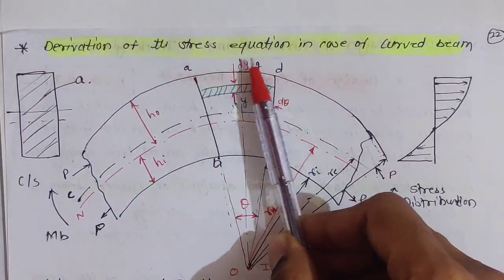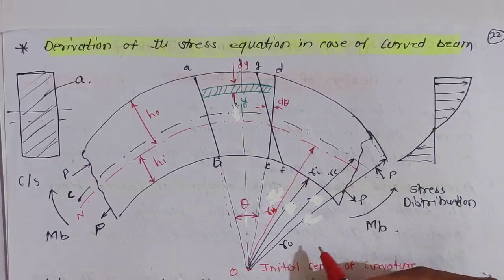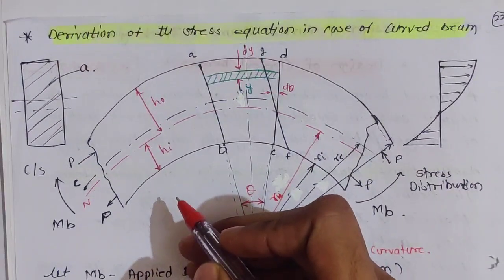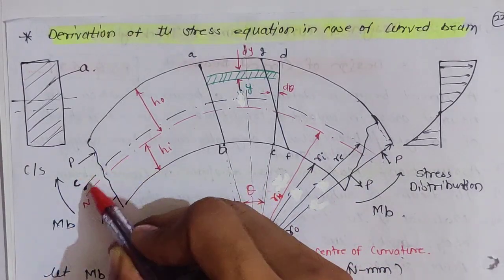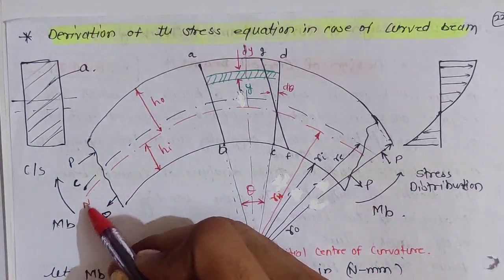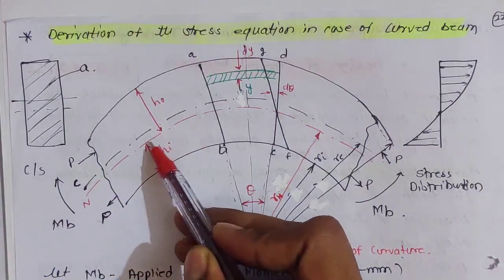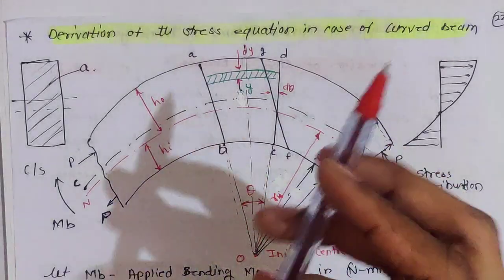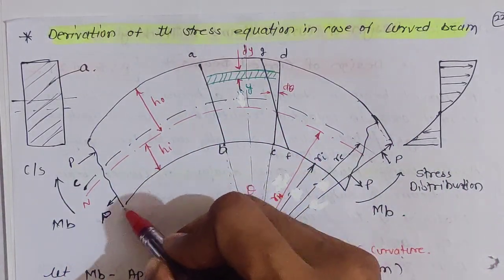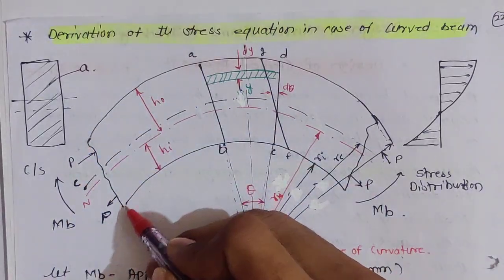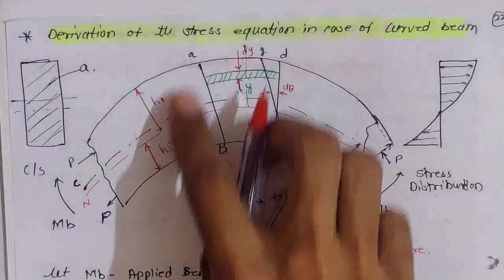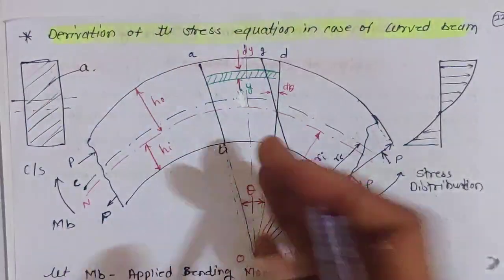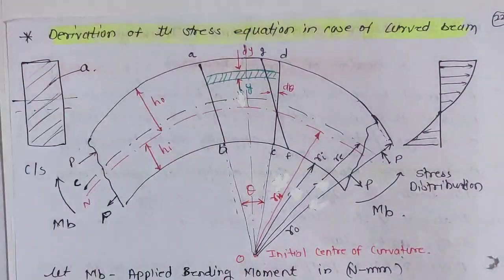In the derivation of the stress equation in case of a curved beam, we have one curved beam where the centroidal axis (black) and neutral axis (red) are not coinciding with each other, as it is a curved beam. The uppermost and lowermost fibers are noted, and this beam has a cross-section area A — if you cut from this side and look, you will see this cross section.